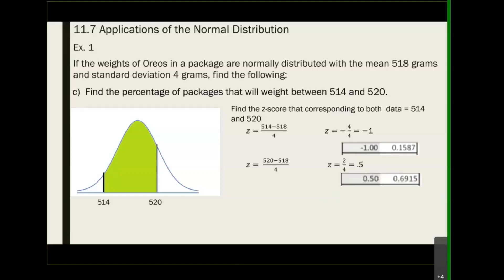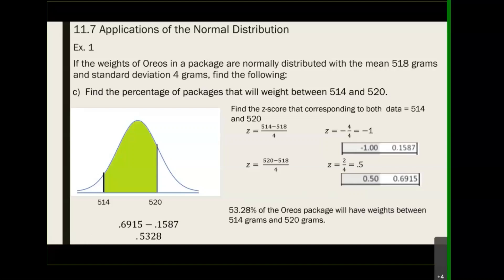Once you have the percentages, all that's left is to take the two areas and subtract them. Do not subtract the z-scores — the z-score just tells you to go into your table and identify your area. Once you have the two areas, subtract them. So 0.6915 minus 0.1587 gives you 0.5328, which means 53.28% of oil cookie packages will weigh between 514 and 520.